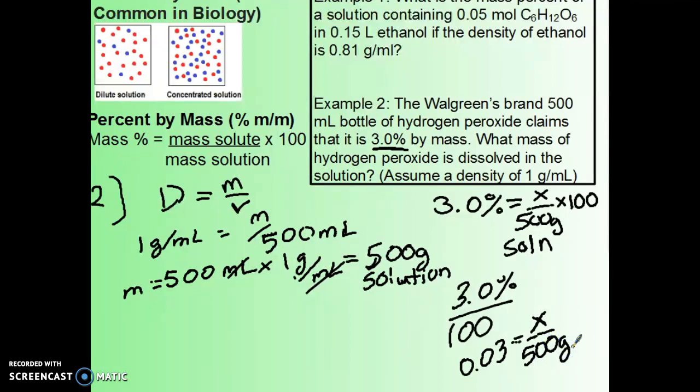To get X by itself now, it's being divided by 500, so we can multiply 500 on both sides. In the end, we'll see that X, the mass of our solute, is equal to 15 grams. That's what your calculator would give you.